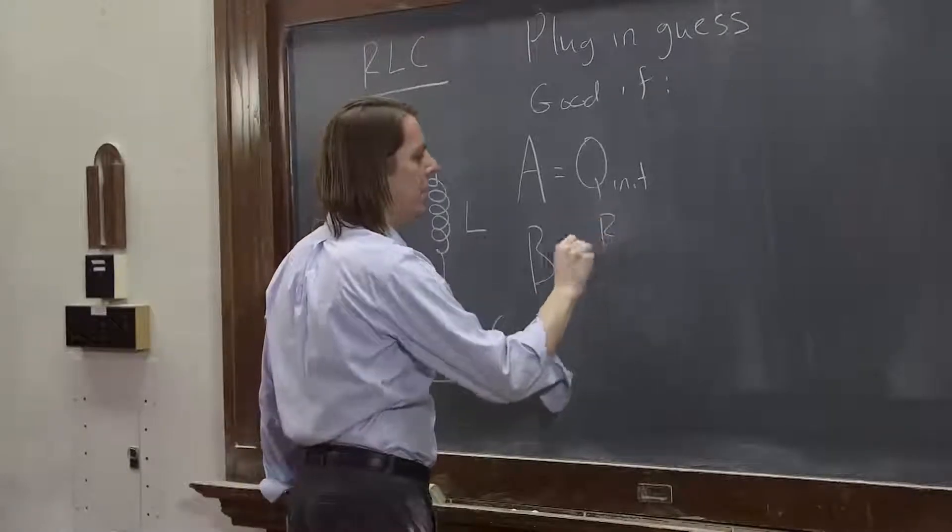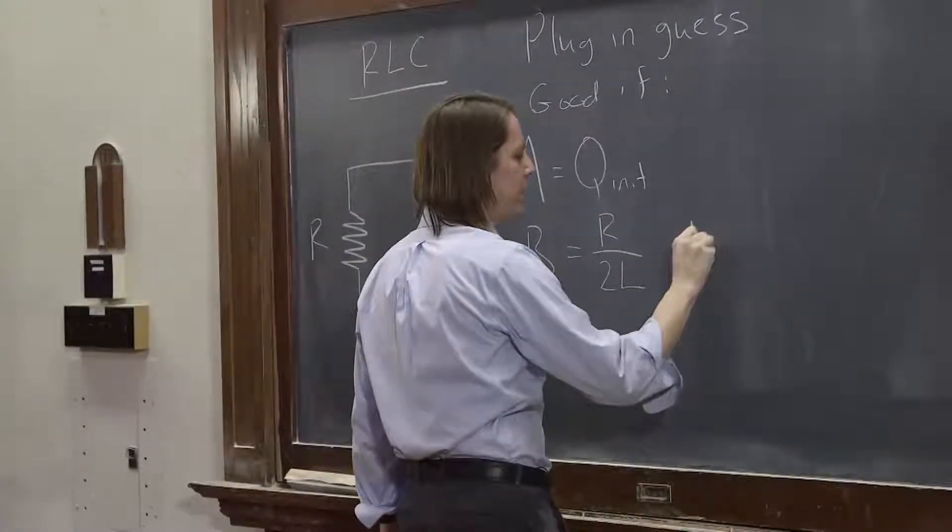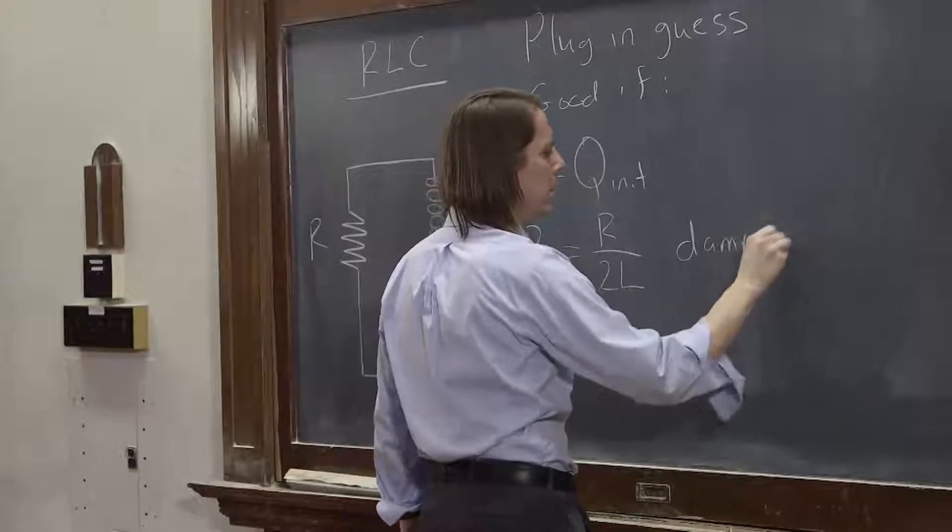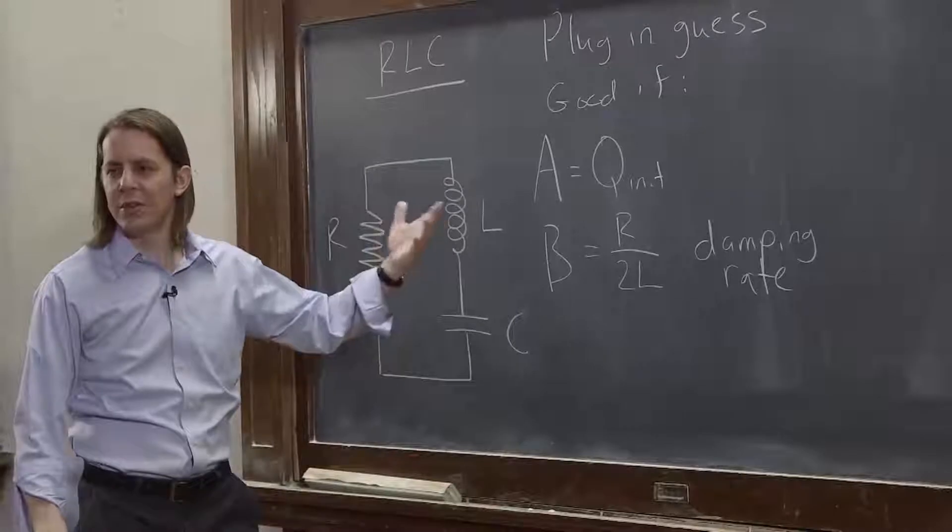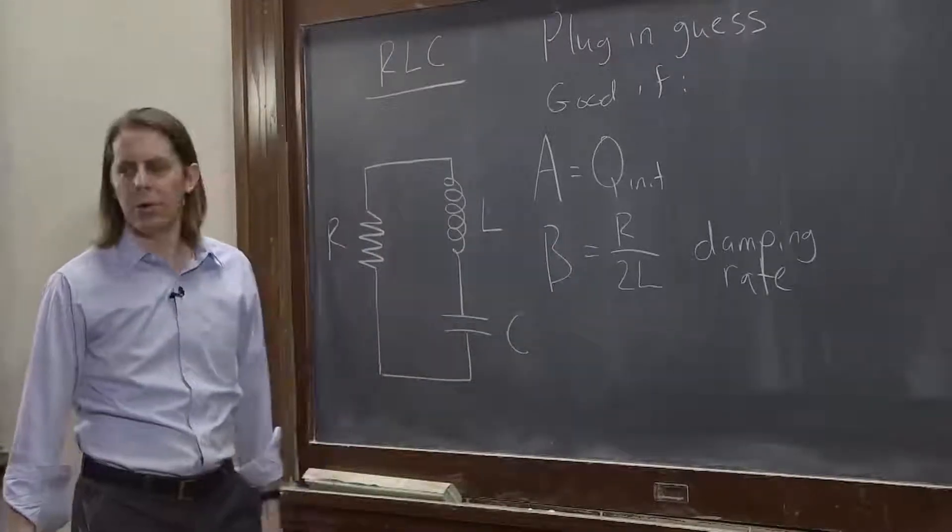B would be R over 2L. And that's basically the damping rate. So just like we thought in that part of the equation, B looked like the damping part. That's the value, R over 2L.